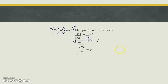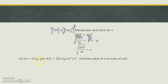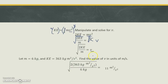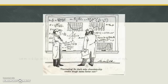We will make sense of this in class. Let's do a practice problem. So v equals the square root of 2ke over m. We've got m equal to 6 kilograms, ke is equal to 363 kilograms times meters squared over seconds squared, and we're solving for v. So we plug it all in: 2 times 363 over 6, and don't forget you've got to take the square root of that. You do 2 times 363, divide by 6, then take the square root. You should end up getting 11 meters per second.